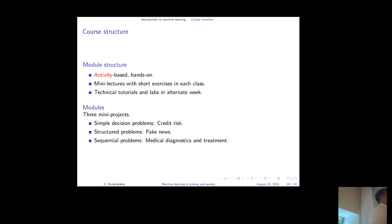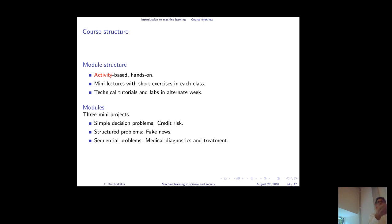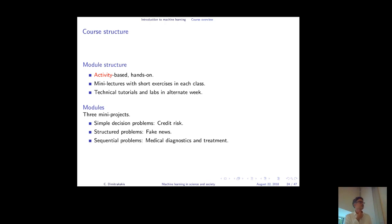The three main projects are: first, credit risk — given a person applying for a loan with known attributes like age and income, you decide yes or no, balancing bank profit with regulatory constraints. Second, analyzing social networks, mainly recommendation systems — like what Facebook shows you — including possibly detecting fake news outlets, with some free choice about the exact direction. Third, the most technical one: sequential drug testing, where you model drug effectiveness and design experiments to most efficiently identify the best drug.